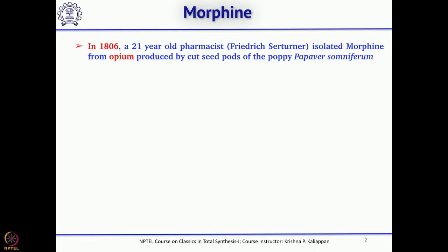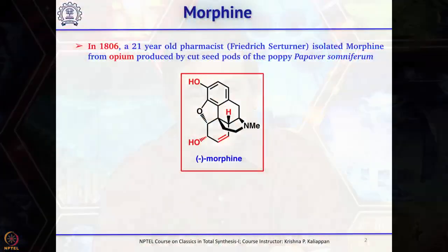Morphine is an interesting alkaloid. In fact, in 1806 — that was the year where morphine was isolated in pure form — it was isolated in pure form from the poppy seeds. That was the beginning of isolation of pure natural products from natural sources. It was done by a young pharmacist called Frederick Sertürner, and this is the structure of morphine.